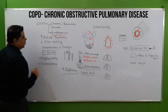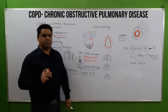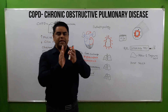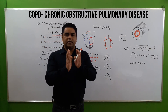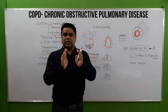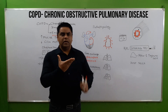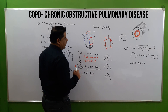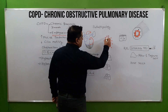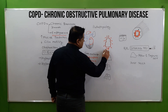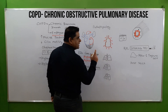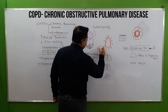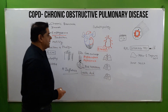Before we discuss emphysema, we should focus on the recoiling capacity of the alveoli. Alveoli are able to recoil — when we breathe in, they expand and contract. The reason alveoli can recoil is that on the surface of each alveolus there is a connective tissue layer known as elastin.